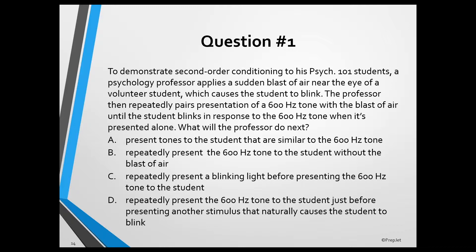The next step is to treat the conditioned stimulus like an unconditioned stimulus and pair presentation of a new neutral stimulus — for example, a blinking light — with presentation of the conditioned stimulus. As a result, the new neutral stimulus will become a conditioned stimulus and elicit the conditioned response when presented alone, which makes answer C the correct answer.